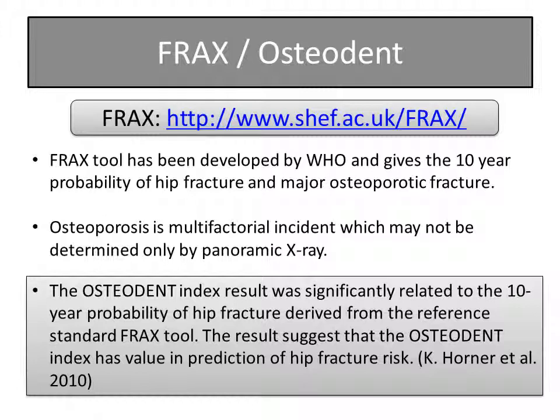Clinically, physicians assess whether a patient needs treatment for osteoporosis using a tool called FRAX, developed by the WHO. FRAX takes into account ethnicity, gender, age, smoking or alcohol consumption history, previous fractures, use of systemic corticosteroids, presence of rheumatoid arthritis, and many other factors. It then calculates the 10-year probability of hip fracture and major osteoporotic fracture.